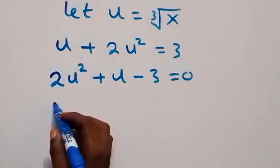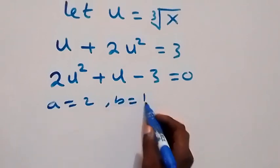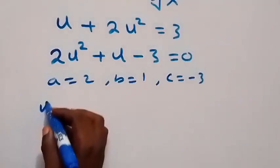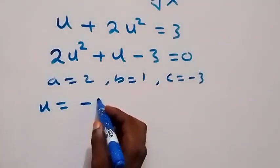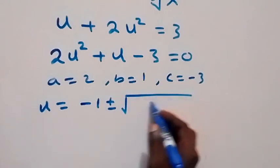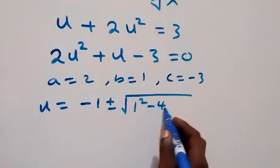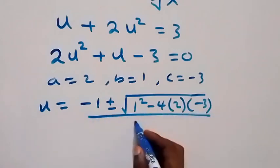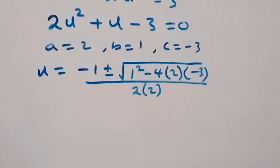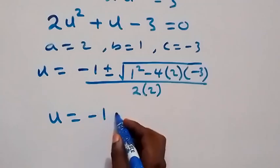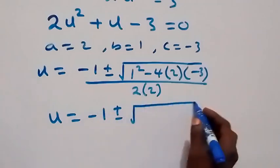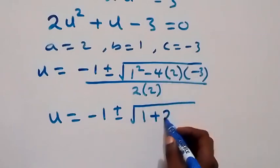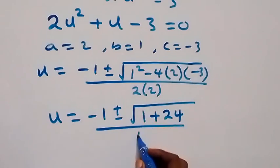We can solve this using the quadratic formula, where a is 2, b is 1, and c is minus 3. So u equals minus b, that's minus 1, plus or minus square root of b squared, that's 1 squared, minus 4ac — that's 4 times 2 times minus 3 — all over 2a, which is 2 times 2.